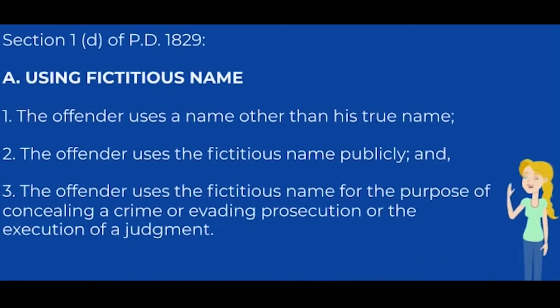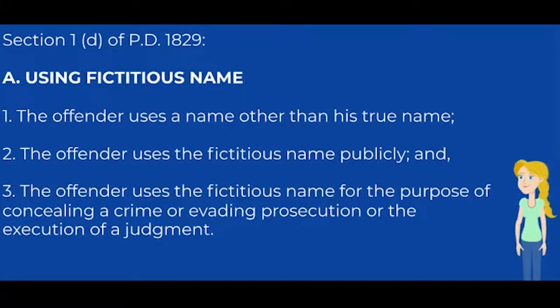Section 1, Paragraph D of PD No. 1829 — Using Fictitious Names: the elements are, first, that the offender uses a name other than his true name; second, that the offender uses the fictitious name publicly; and third, that the offender uses the fictitious name for the purpose of concealing a crime or evading prosecution or the execution of a judgment.